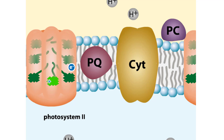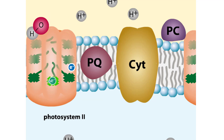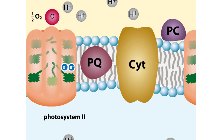After losing an electron, the chlorophyll molecule is considered oxidized and carries a positive charge. The electron lost from the chlorophyll molecule must be replenished. In photosystem II, water replenishes chlorophyll's lost electrons. After donating two electrons, a water molecule dissociates into two hydrogen ions and half of an oxygen gas molecule. The oxygen later enters the atmosphere.